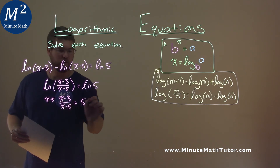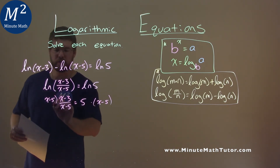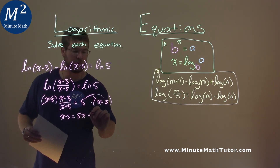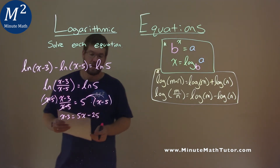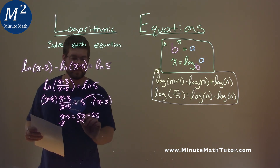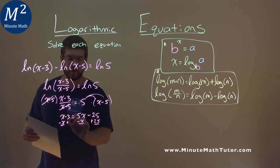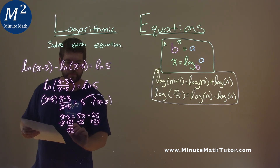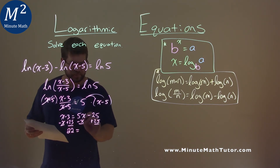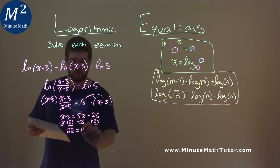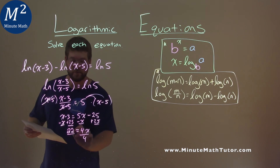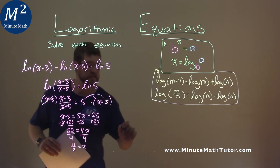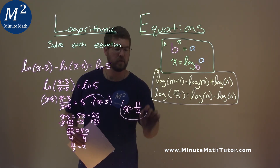Multiply x minus 5 to both sides — this cancels. And we have x minus 3 equals 5x minus 25. Now let's combine like terms. Subtract x from both sides and add 25: negative 3 plus 25 is 22, and that equals 5x minus x, which is 4x. Divide both sides by 4, and 22 over 4 simplifies to 11 over 2. So my final answer is x equals 11 over 2.